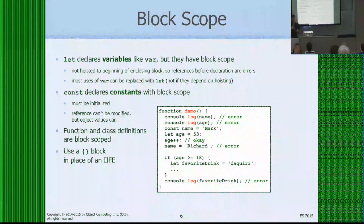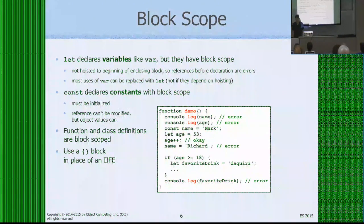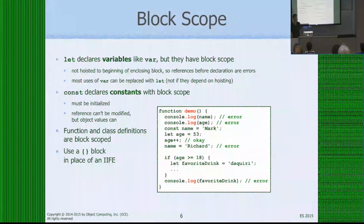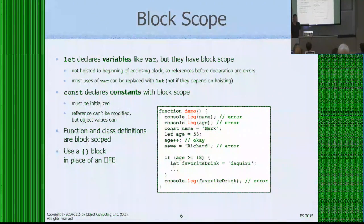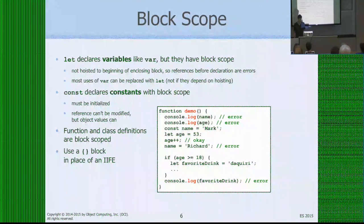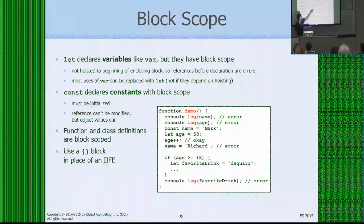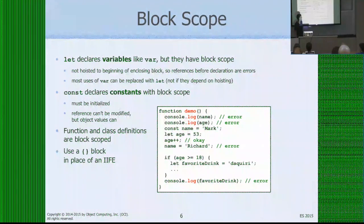`const` means you can't modify the variable. Of course if you make a variable `const` that refers to an object, that just means you can't change it to refer to a different object, but you can still get to the properties inside and change those. Functions and class definitions are block-scoped, so if I declare a function inside a block of an if statement, I can only use it there. Also, you no longer need an immediately invoked function expression (IIFE) to create a scope — you can just use curly braces.